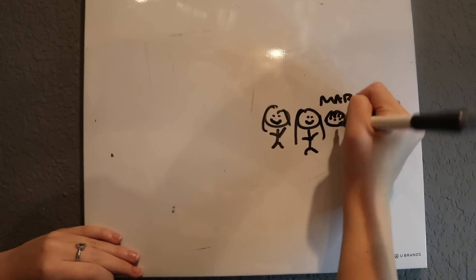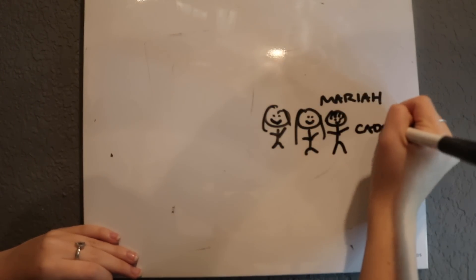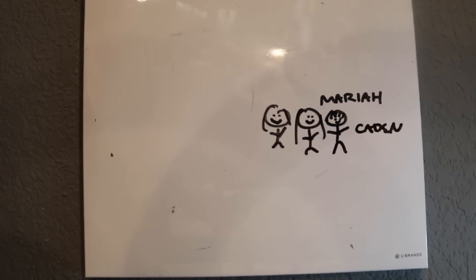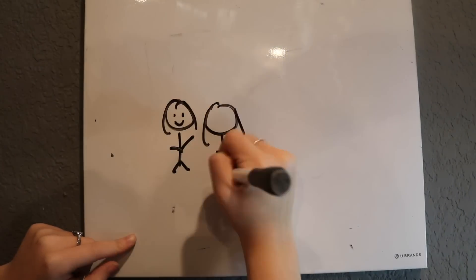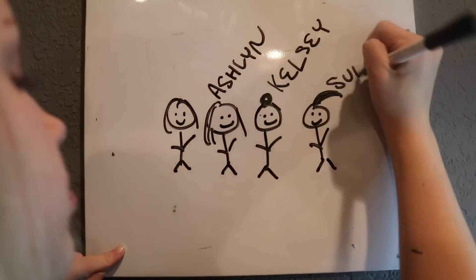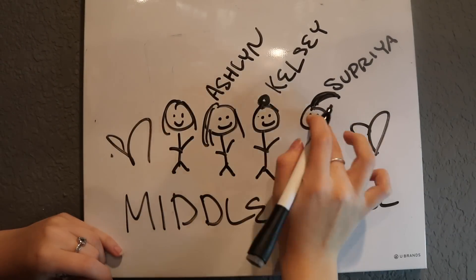She had a twin brother named Caden, and we were all really close. I would sleep over at their house all the time, and we had a lot of fun. They were really accepting. I had another group of friends, too. Kelsey, Ashlyn, and Sapria. I carried these friends over to middle school.